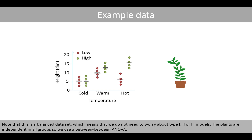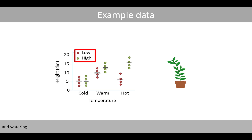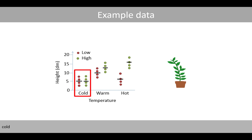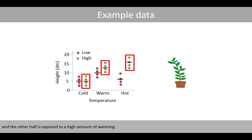The plants are independent in all groups, so we use a between-between ANOVA. The two factors in this study involve temperature and watering. In total, we have 24 plants. These are split into three groups that are exposed to different temperatures: cold, warm, and hot. In addition, in each temperature group, half of the plants are exposed to a low amount of watering, and the other half is exposed to a high amount of watering.